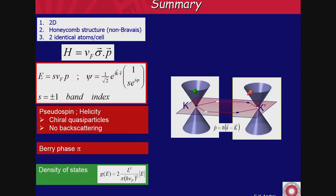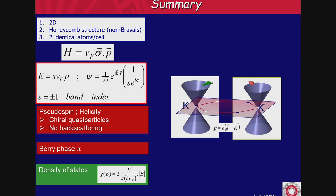Here's the summary of the first part. The three ingredients lead to the Dirac-Weyl Hamiltonian — simply the Pauli matrix projection on the momentum, or the helicity. The energy is linear in momentum, so we have ultra-relativistic quasi-particles. The wave function is a plane wave multiplied by a spinor. This pseudo-spin is parallel to the momentum in the electron band and anti-parallel in the hole band, and everything is reversed at K prime because they are time-reversal-symmetric brothers of each other. The electrons have a Berry phase of pi — you have to go twice around in reciprocal space to come back to the same place.